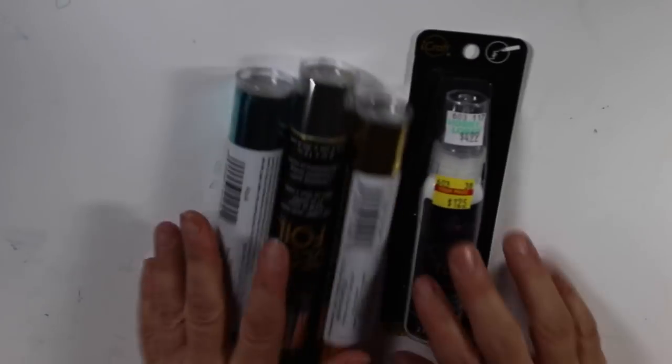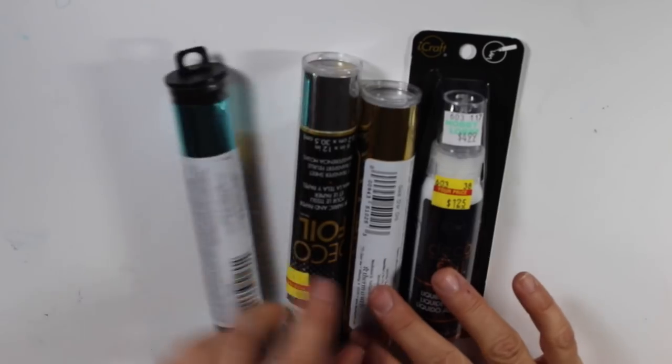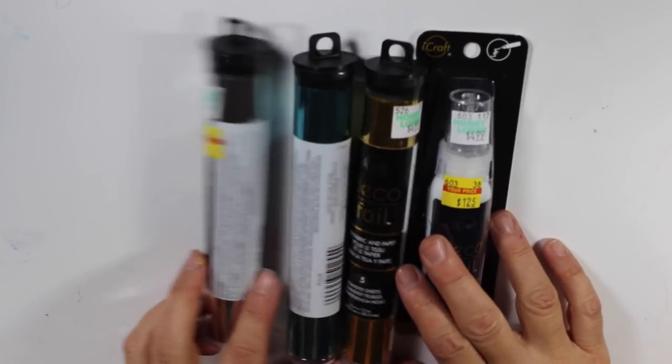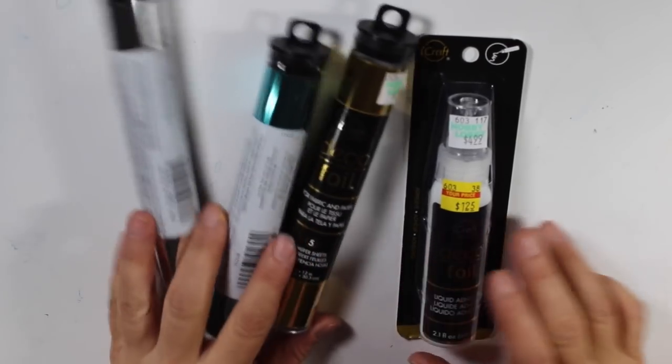And I got foil. So I got some deco foils. These are $1.25. I got a silver, a blue, and a gold.